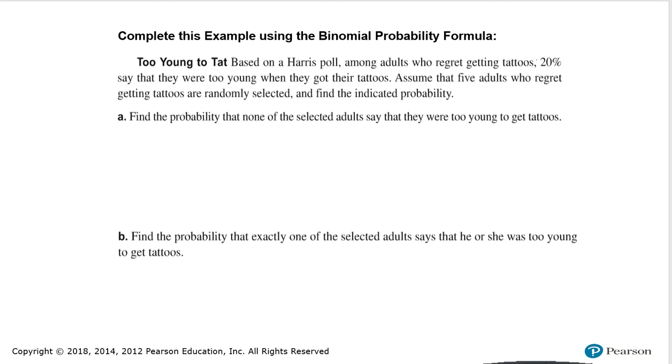Part A. Find the probability that none of the selected adults say that they were too young to get tattoos. Well first, is this a binomial probability distribution? So are there two outcomes? Yes, they either say they were too young or they don't say they were too young. And is it a fixed number of trials? Yes, there are five adults. Are the trials independent? Yes, they're independent. That means that the outcome of any individual trial doesn't affect the probabilities of the other trials. And are the probabilities of success the same from trial to trial? And the answer is yes. The probabilities are the same. We have 20% as our probability. So this is a binomial probability distribution. I am told to use the formula, just like you will be on the test. You'll be told to use the formula. So the first thing I would recommend that you do is write the formula down.